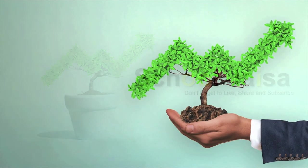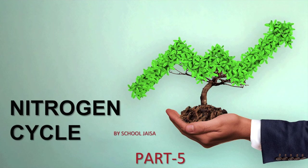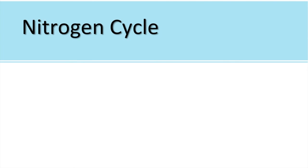Continuing with the same chapter, Crop Production. Now we are going to study the nitrogen cycle. This is the fifth part of the chapter. Before understanding what the nitrogen cycle is, we should know that nitrogen is used by life forms to carry out many of their functions — for the formation of protein, amino acids and nucleotides.